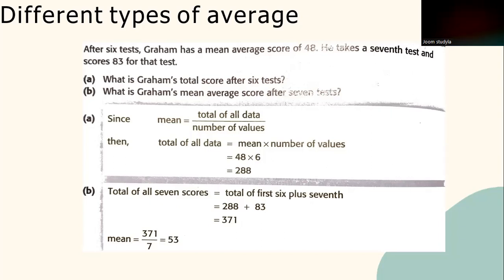Question 2: what is Graham's mean average score after 7 tests? The total of all 7 tests equals the total of the first 6 plus the 7th test score. So total is 288 plus 83, which gives 371. To get the mean average score after 7 tests, divide 371 by 7, which equals 53.